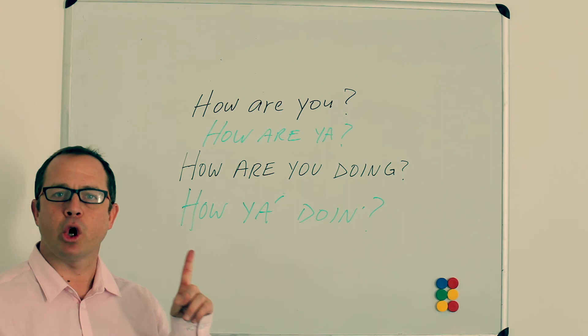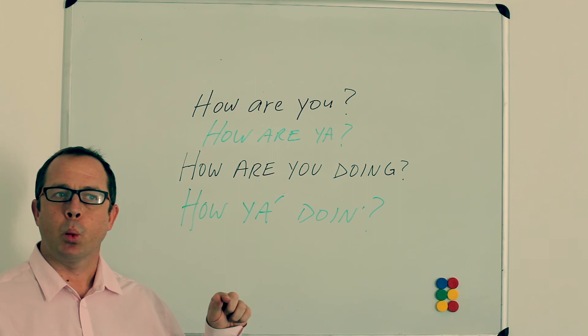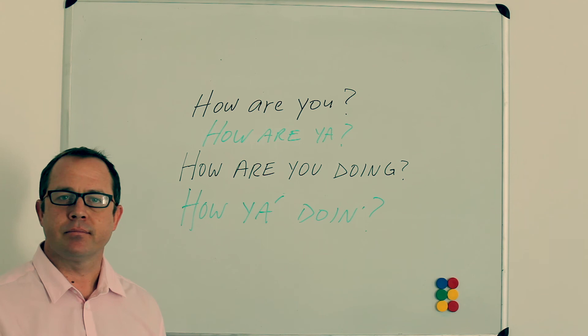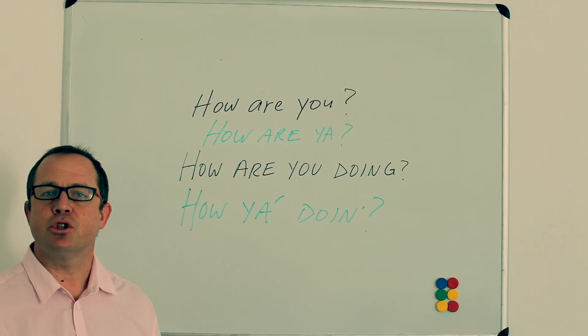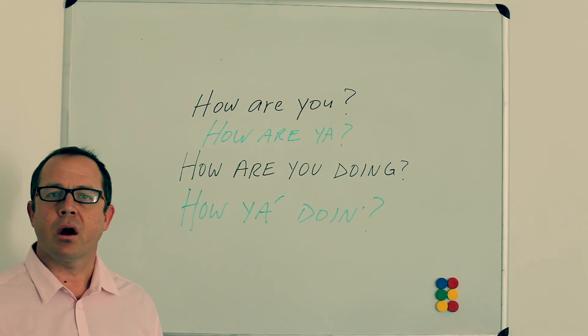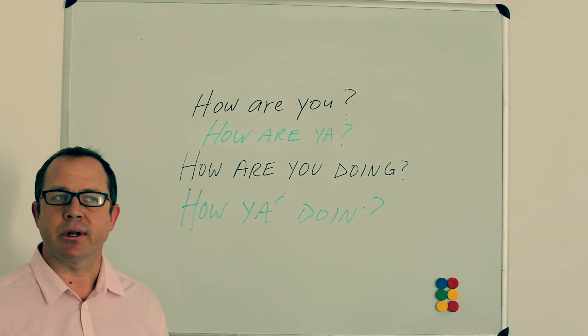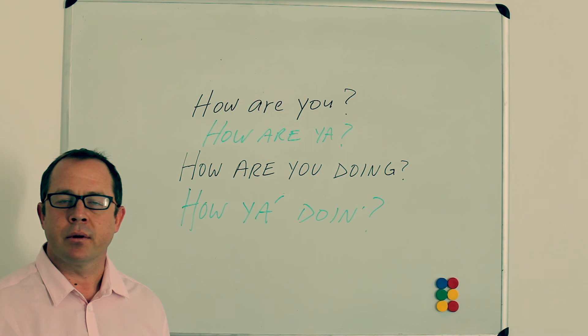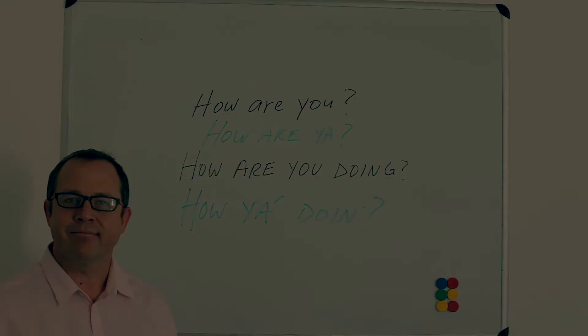So you can practice — watch me and repeat what I say: 'How are you doing?' The G is gone, we don't use it. And the R is gone, we don't use it. 'How are you doing?' — this is what you'll hear 90% of native speakers in America say. This is how it will sound: 'How are you doing?' or 'How are you?'